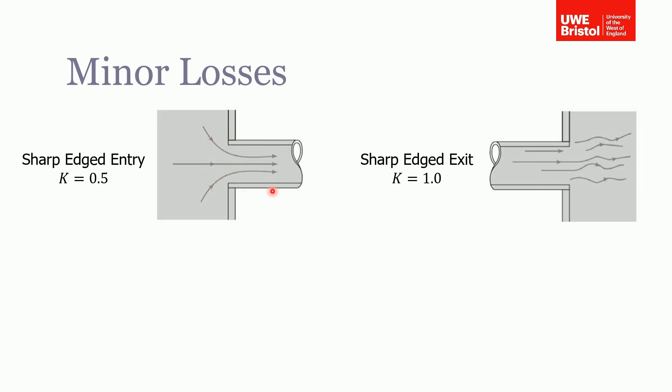So here's an example of a sharp edge entry, going from a tank entering the pipe, so the loss coefficient for this is 0.5, and here we have a sharp edged exit where the loss factor is 1.